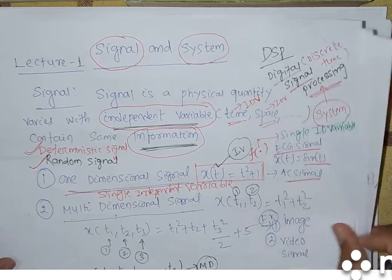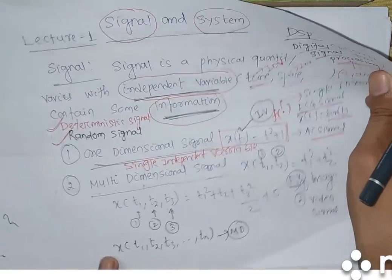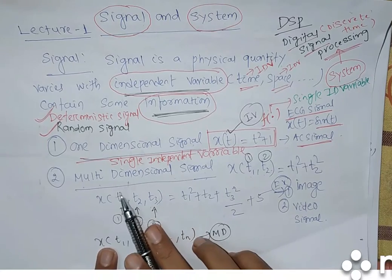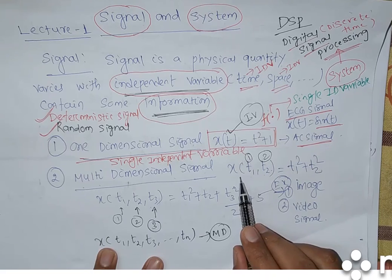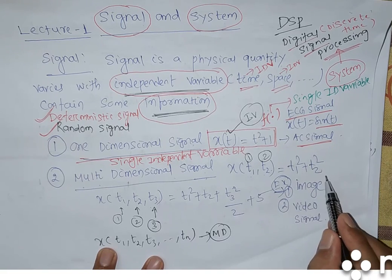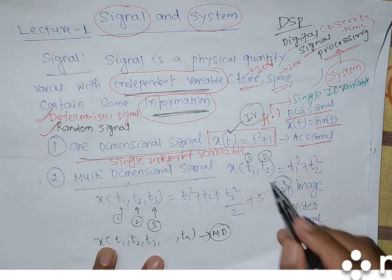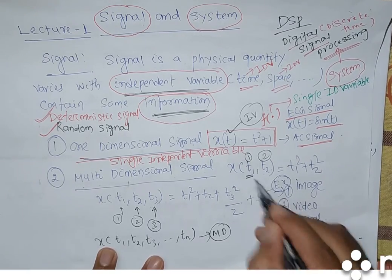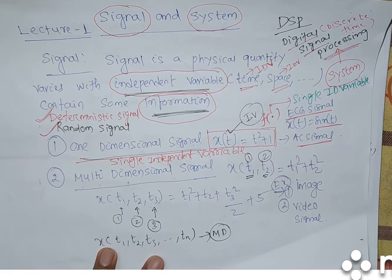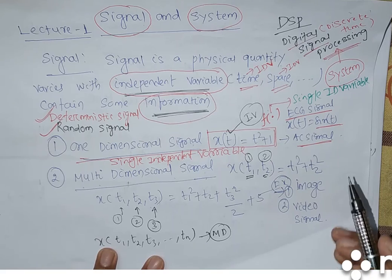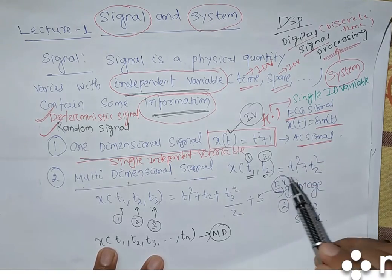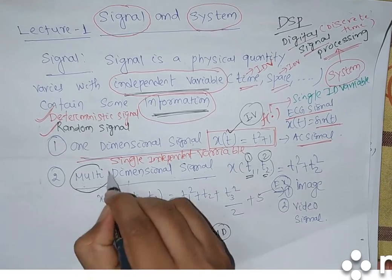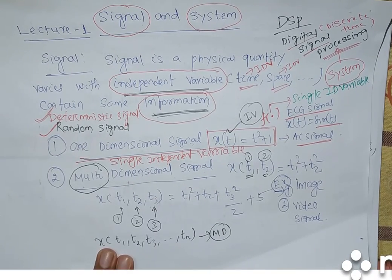Whenever some more independent variables are present, it is known as a multidimensional signal. For example, x(t1, t2) = t1² + t2² — if you see, t1 is one independent variable, t2 is another independent variable. That is a function of two independent variables, so you can say it is a two-dimensional signal. Since it is more than one, that's why I use the word multidimensional signal.